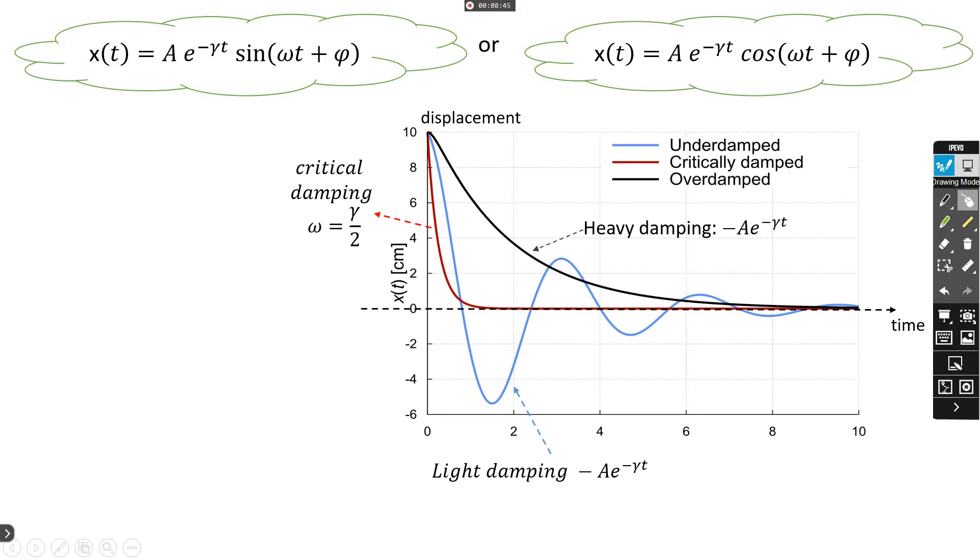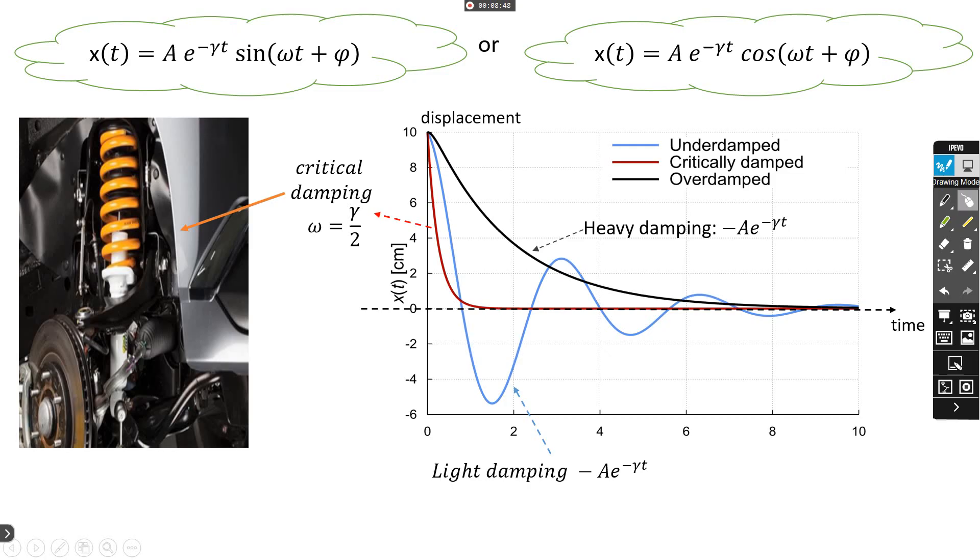This critical damping yields the minimum loss energy and the maximum power of the system. Critical damping is very important in the shock absorber which is found in the suspension car to prevent accidents and mechanical failure.